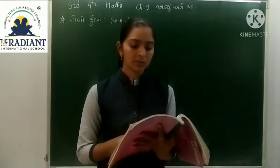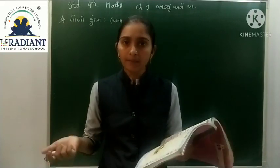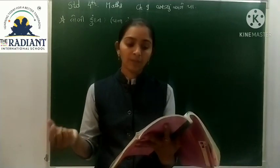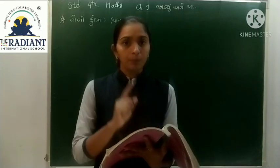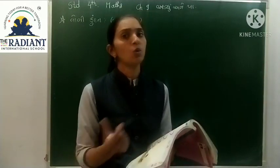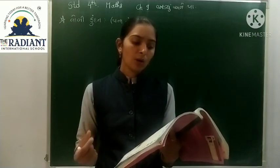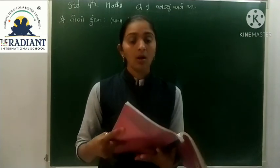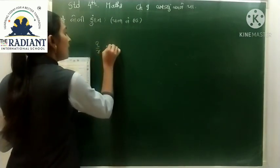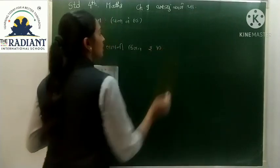કુંડ બજાર ગયો. ત્યાં ઘણા બધા વેપારીઓ પાસે કોળું હોય છે. તો એણે પ્રથમ વેપારી, જે પ્રથમ દુકાનદાર હતો, તેને પૂછ્યું. પેલો કોળું વેચ્ચો. 'આ કોળાનો એક ચતુર્થ ભાગ ની કિંમત રૂપિયા દસ છે.' હવે એ ગયો.